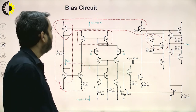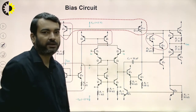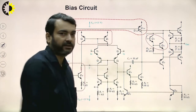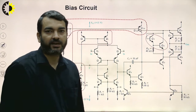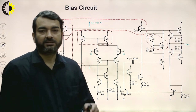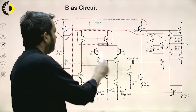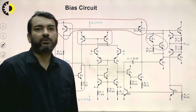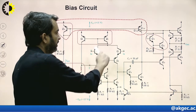There is another current mirror formed by transistors Q12 and Q13. Transistor Q13 is a double collector transistor, which can be understood as two transistors whose base-emitter junctions are connected in parallel. There is yet another current mirror formed by transistors Q8 and Q9, which provides bias to the input stage.